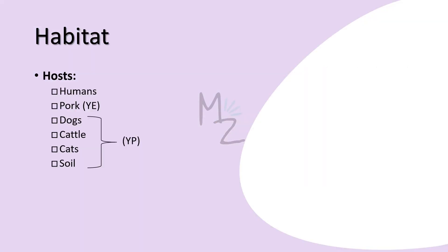Habitat: humans are hosts, and certain animals are also hosts for both organisms. Using the abbreviations YE for Yersinia enterocolitica and YP for Yersinia pseudotuberculosis: pork is the host for Yersinia enterocolitica (YE), while dogs, cattle, cats, and soil are hosts for Yersinia pseudotuberculosis (YP).